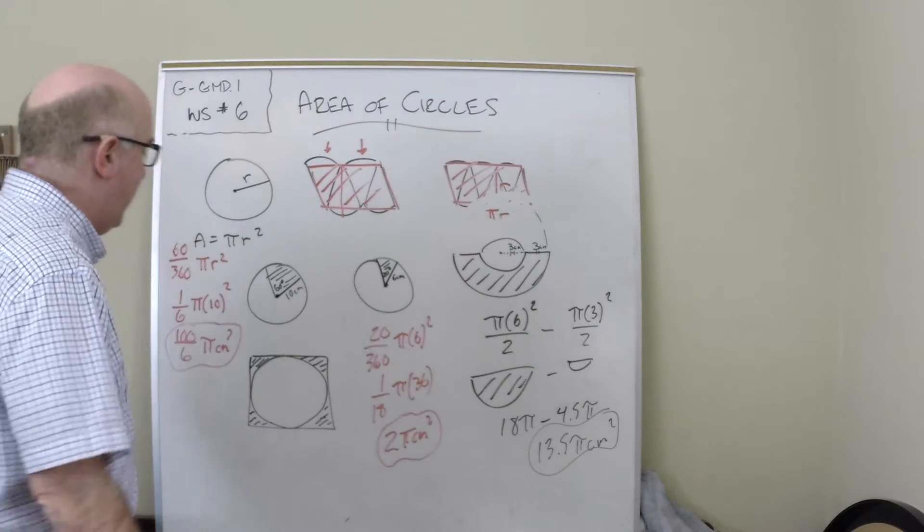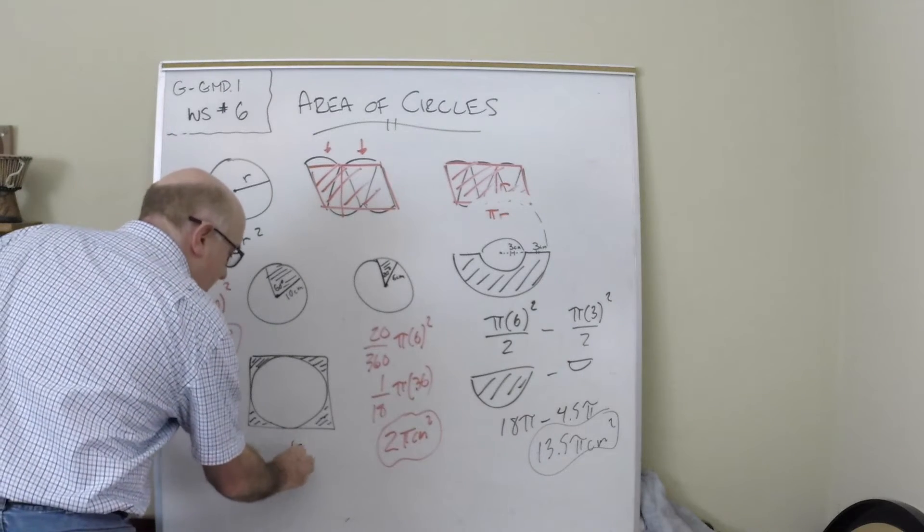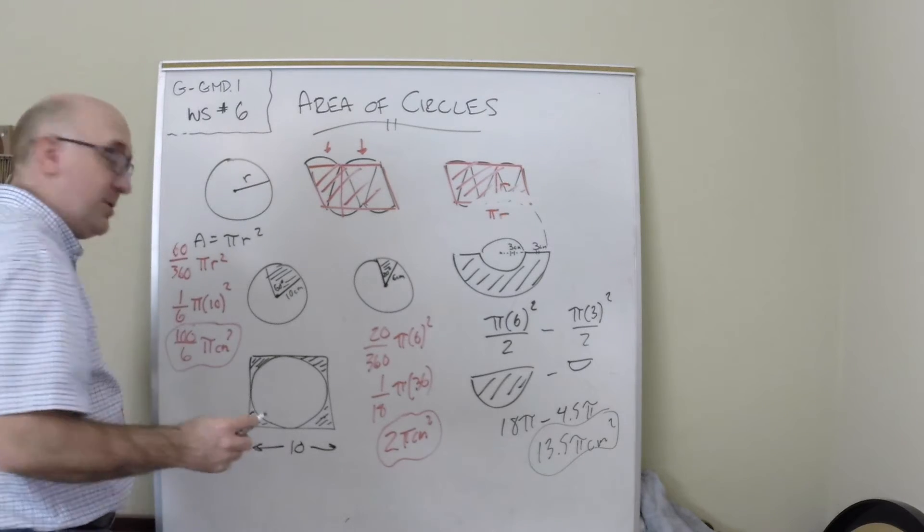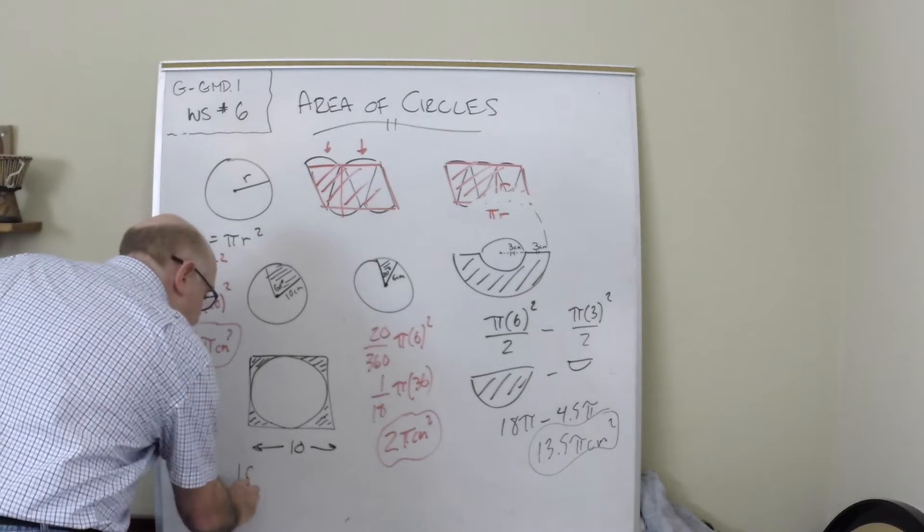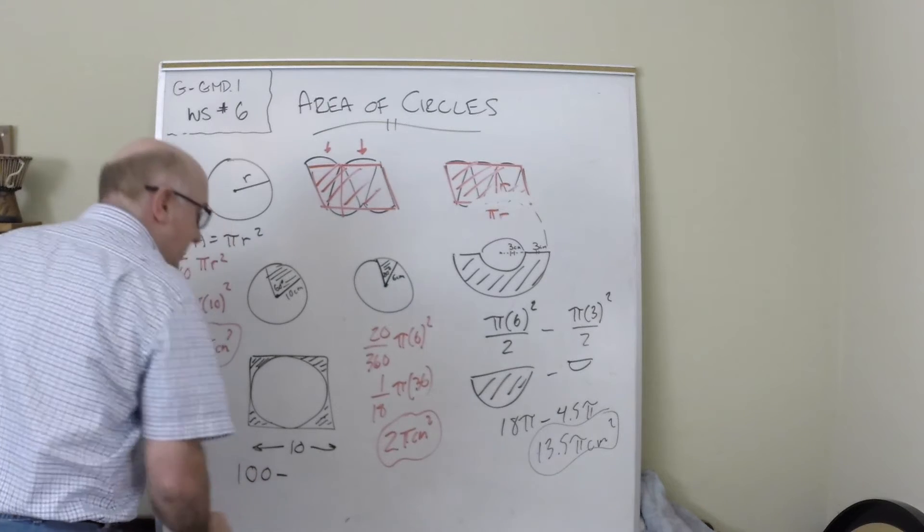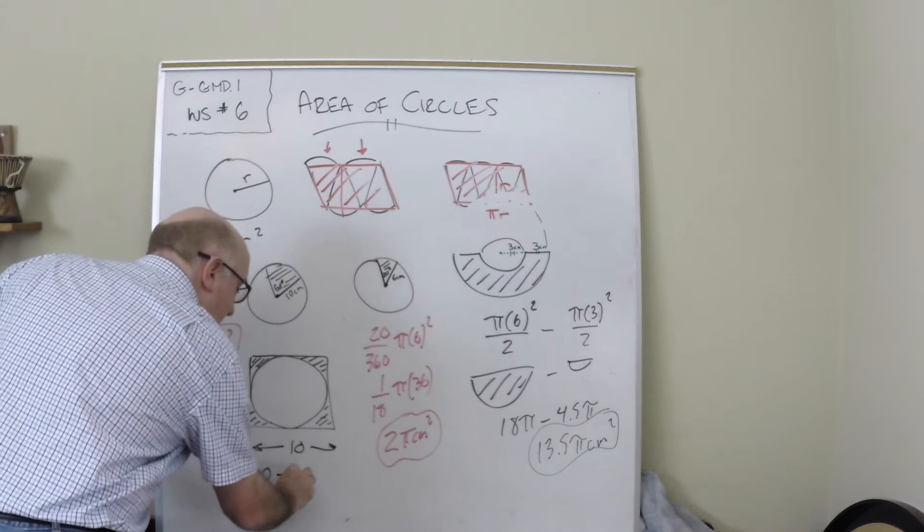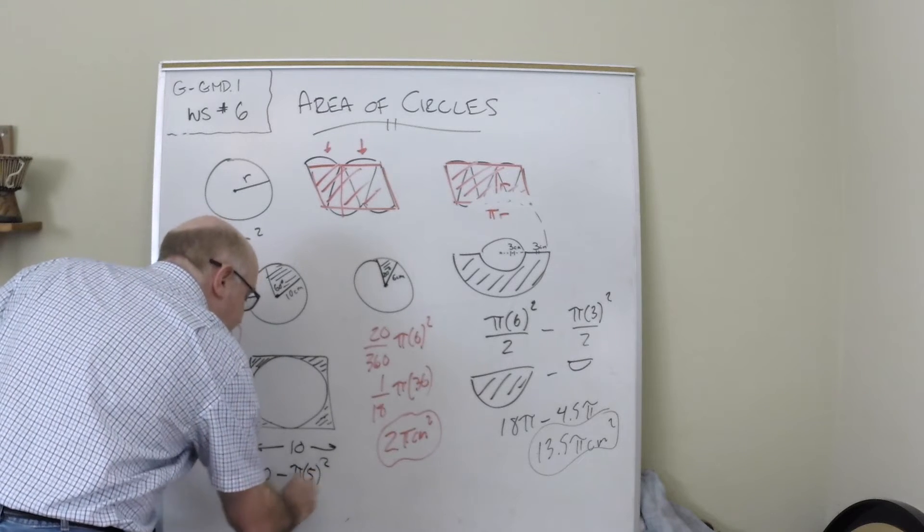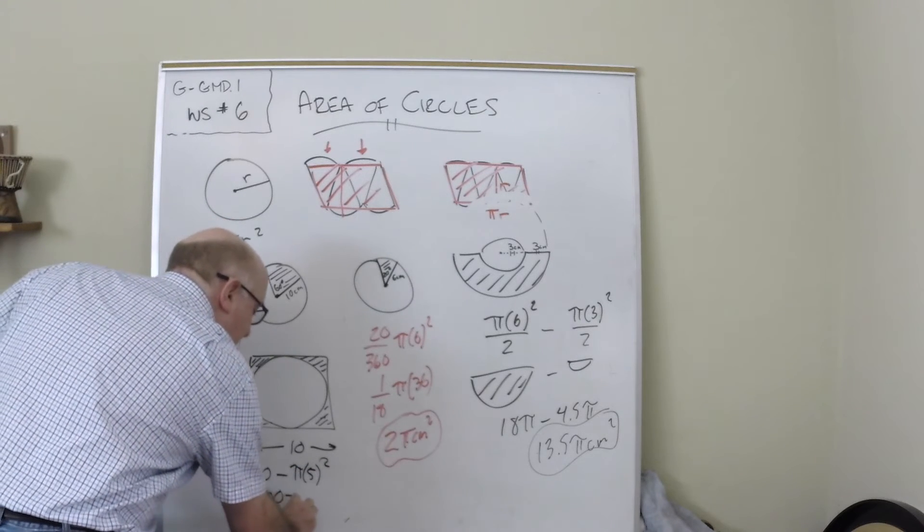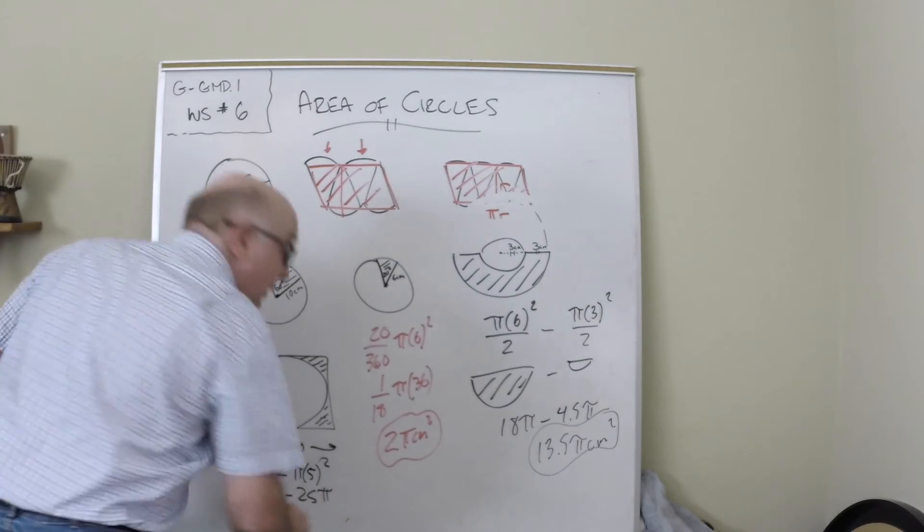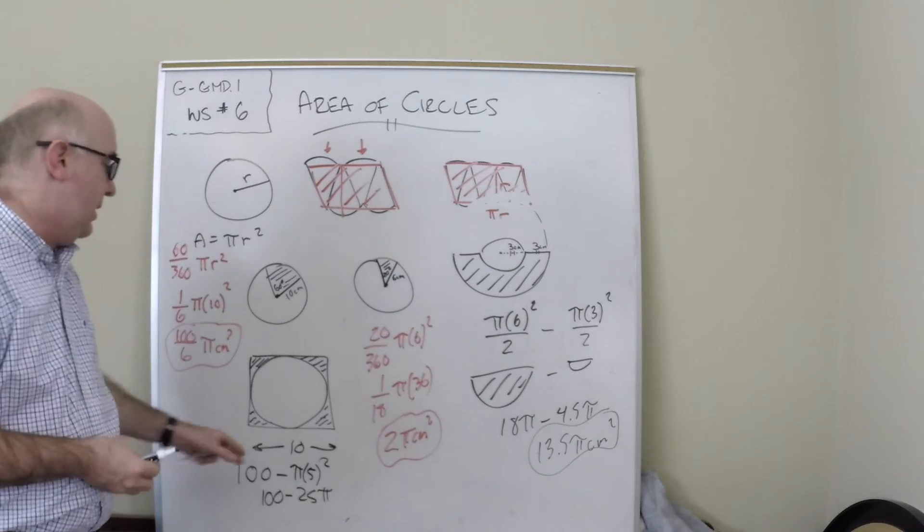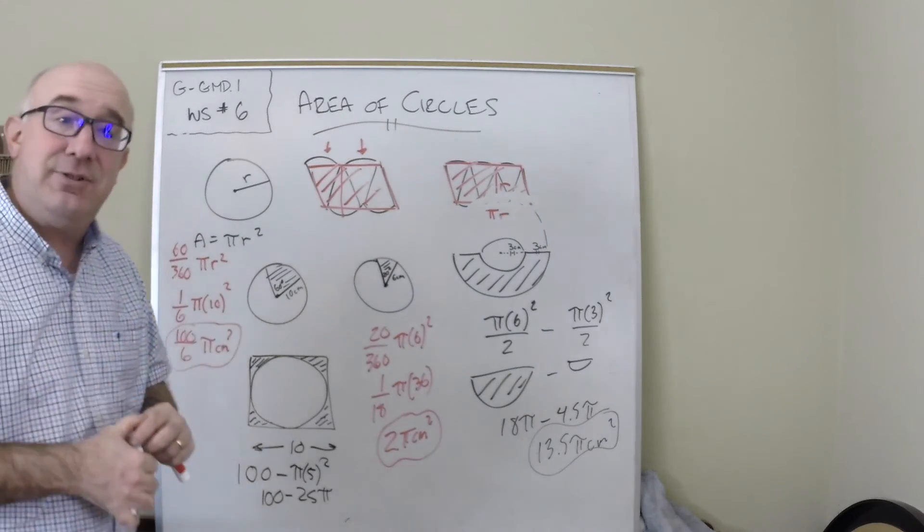And the idea is that, let's say the side is 10. Well, then your square is 10 times 10 for a hundred, and then we're going to subtract the circle, which is pi r squared, which would be five in this case. So our answer would be a hundred minus 25 pi. We're a little bit too low—oh, you can see it I guess—but it'd be a hundred minus 25 pi as an exact answer.